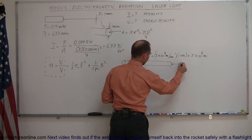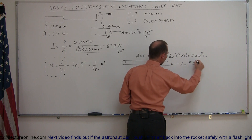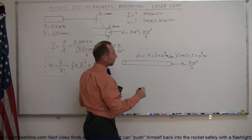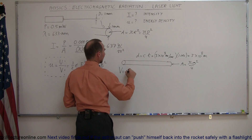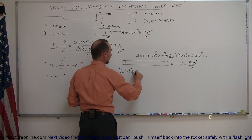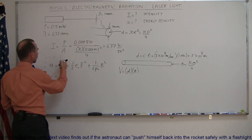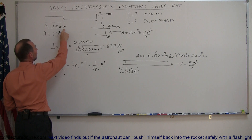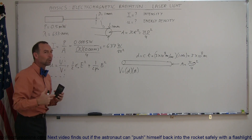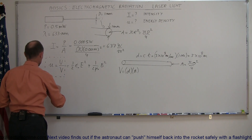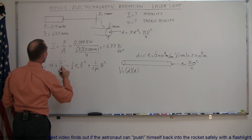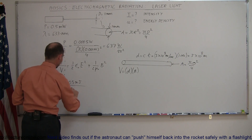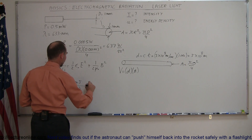We also know the cross-sectional area, which equals πd²/4 as calculated earlier. So the volume equals the length (distance) times the cross-sectional area. The energy contained in that section of beam equals the energy output per second — since the power is 0.5 milliwatts, that's 0.5 millijoules per second. So the energy density U equals energy divided by volume, which is 0.5 millijoules divided by the volume.